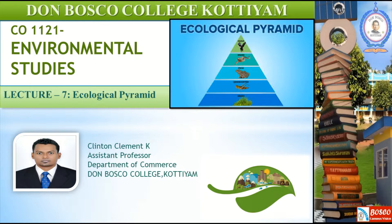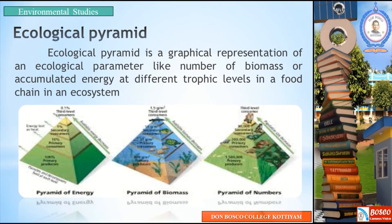In this lecture, we'll be discussing about Ecological Pyramid. Ecological Pyramid is a graphical representation of an ecological parameter like number of biomass or accumulated energy at different trophic levels in a food chain in an ecosystem.